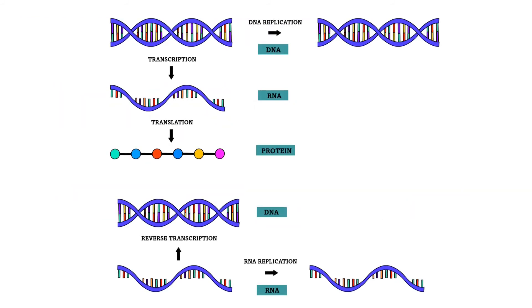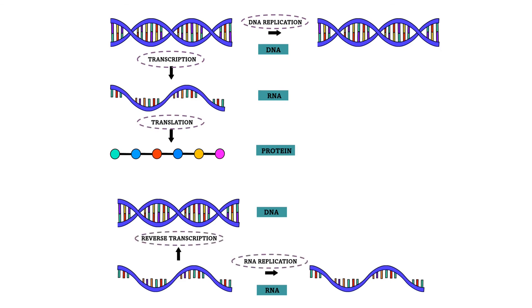This means that today it is believed that there are five possible information pathways: DNA replication, transcription, translation, RNA replication, and reverse transcription.